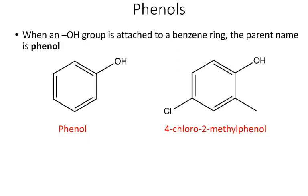Benzene derivatives appear frequently in organic chemistry. When an OH is attached directly to a benzene ring, the compound is called phenol. Substituted derivatives use phenol as the parent name. Numbering starts from the OH carbon, and we assign positions to get the lowest numbers possible. For example, with a chloro and a methyl substituent, choosing the direction that gives positions two and four results in the name '4-chloro-2-methylphenol'.